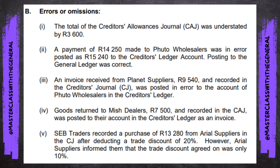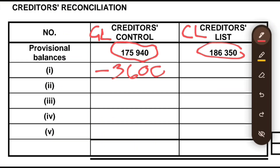The actual payment is R14,250 but it was posted as R15,240. We deceived ourselves into thinking we paid R15,000 instead of R14,000, so we overstated our payment, which over-reduced our balance. We need to find the difference — R15,240 minus R14,250 equals R990. That is how much we over-reduced the balance by, so we go to the creditors list and add plus R990 to correct it.